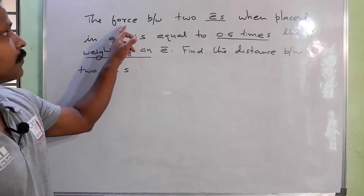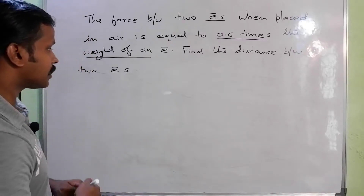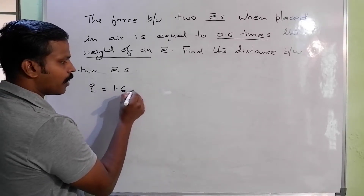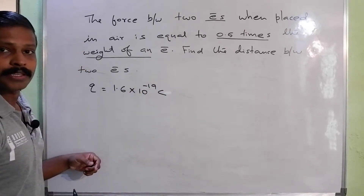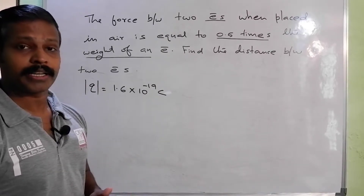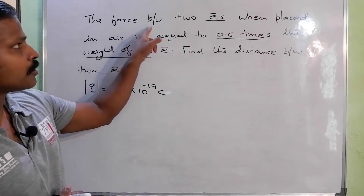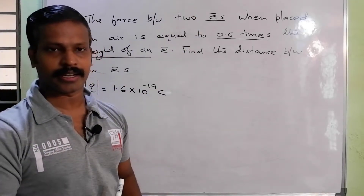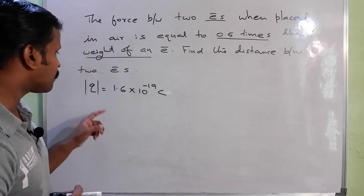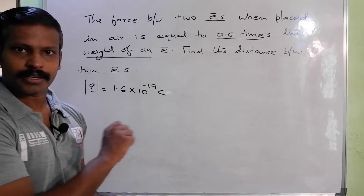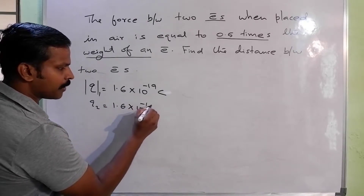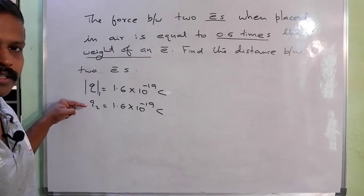The force between two electrons — now, the two electrons have a charge Q. What is Q? Q is the value of the electron charge: 1.6 into 10 raised to minus 19. This is the electron charge magnitude. Q1 and Q2 are the same value: 1.6 into 10 raised to minus 19. Two electrons have the same charge.